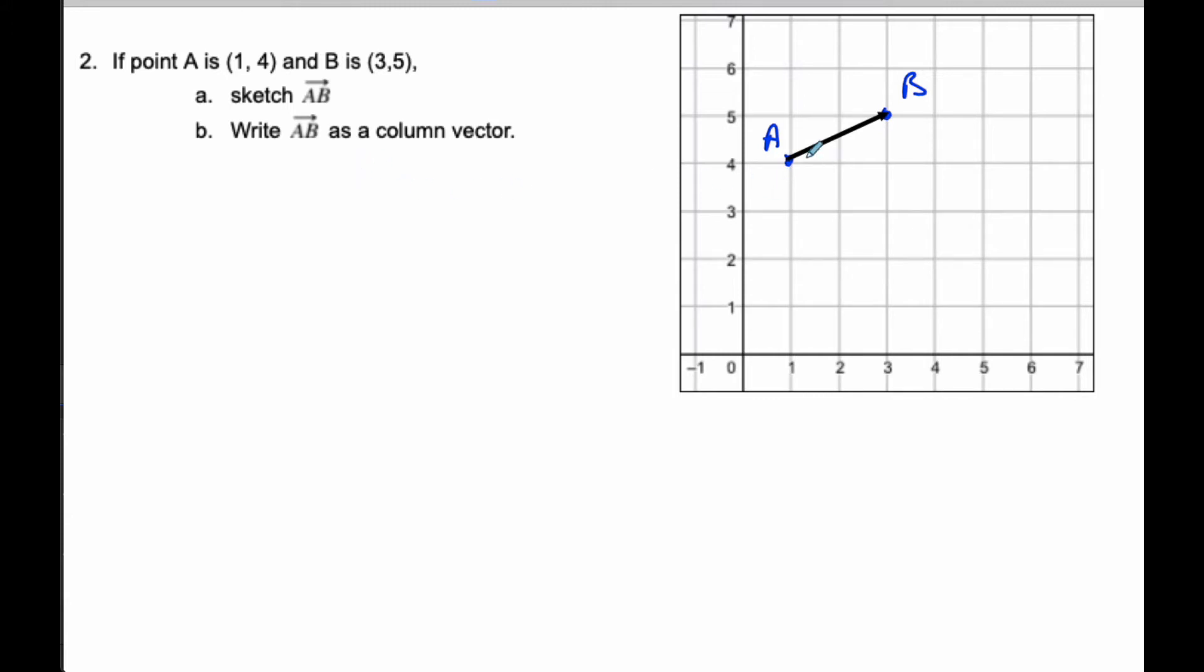Now, if I want to write it as a column vector, I can see when I look at this that it's going to be 2 in the x direction and 1 in the y direction. But how would we get it if we don't want to draw these out all the time? What we do is we go the head subtract the tail. It's always the head minus the tail. So we take 3,5 minus 1,4. So 3 minus 1 is 2, 5 minus 4 is 1. We always go head minus tail and then we will get our column vector, and this is AB.